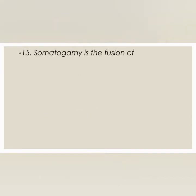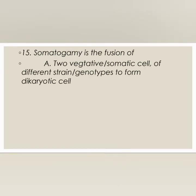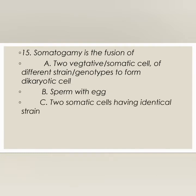Next question: somatogamy is the fusion of — two vegetative or somatic cells of different strain genotypes to form dikaryotic cells, sperm with egg, two somatic cells having identical strain, or egg with egg? The correct answer is option A: two vegetative or somatic cells of different strain genotypes to form dikaryotic cells.